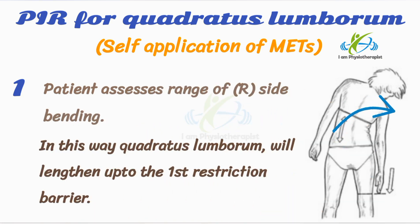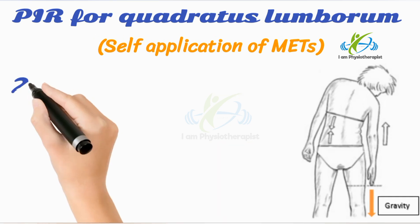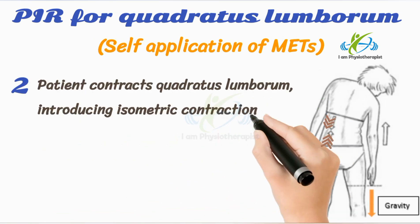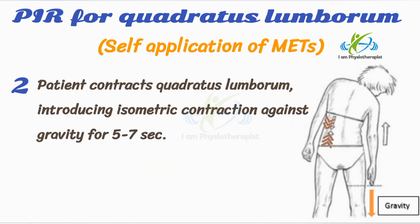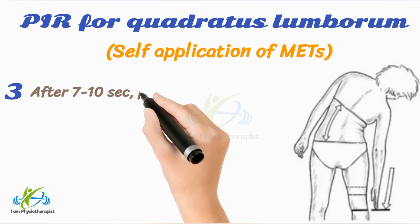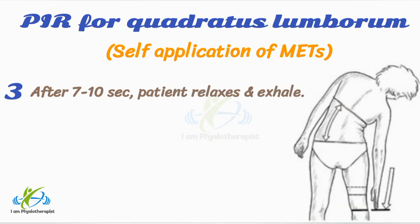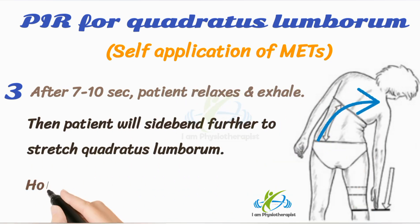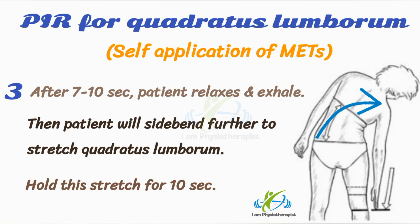The quadratus lumborum muscle is lengthened up to the first restriction barrier by assessing the range of right side bending. The patient then contracts the quadratus lumborum muscle by straightening slightly, introducing an isometric contraction against gravity for 5–7 seconds, while inhaling and holding their breath. After 7–10 seconds, the patient relaxes and exhales, then side bends further to stretch the quadratus lumborum muscle, holding the stretch for 10 seconds.